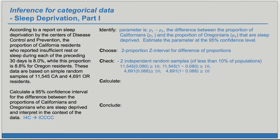Now we're ready to calculate our interval. We're using the form: point estimate plus or minus critical value times standard error of estimate. We're trying to estimate P1 minus P2, so our point estimate will be the difference in sample proportions, P-hat 1 minus P-hat 2. Our critical value, since we're basing this on a normal distribution, is Z-star. And we'll be looking at the standard error of P-hat 1 minus P-hat 2.